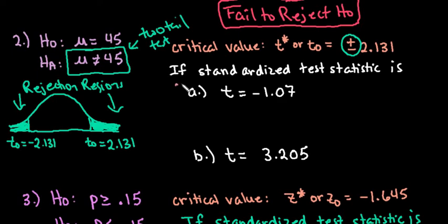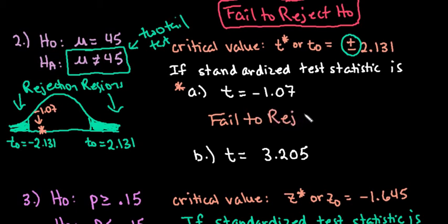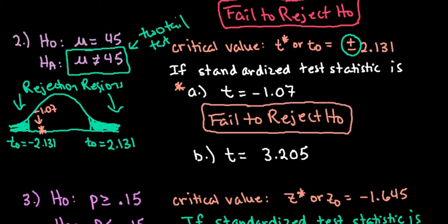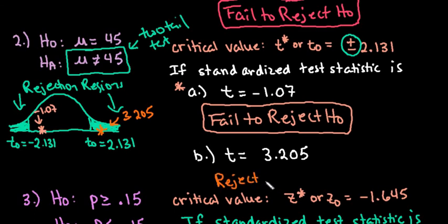For our first T example, T = -1.07 falls between the two critical values, so it is not in either rejection region — we fail to reject the null hypothesis. For the next one, T = 3.205 falls to the right of 2.131, so it is in the rejection region. Therefore, we reject the null hypothesis.